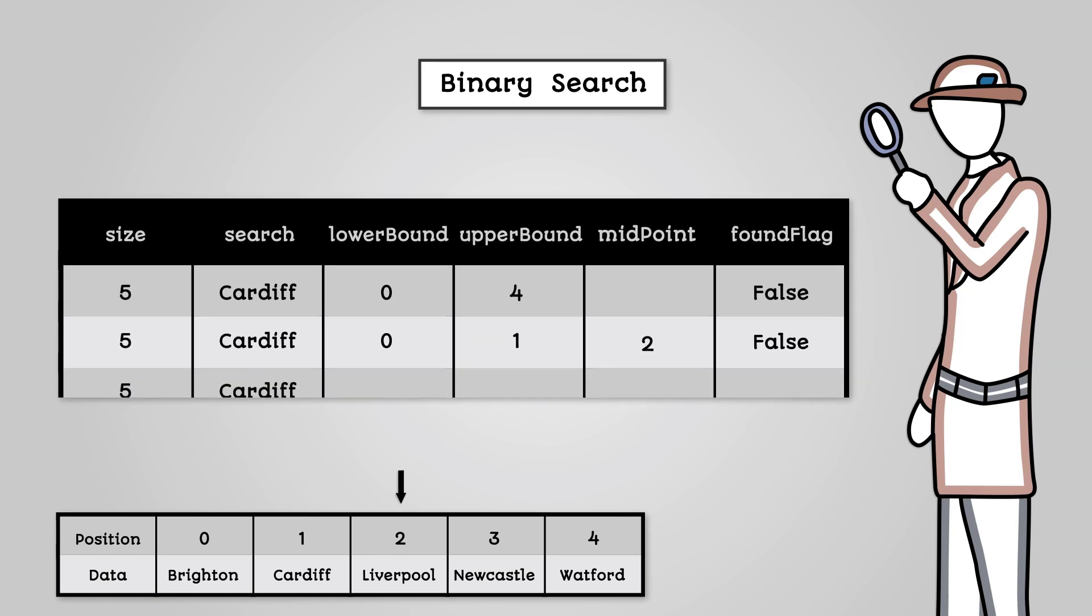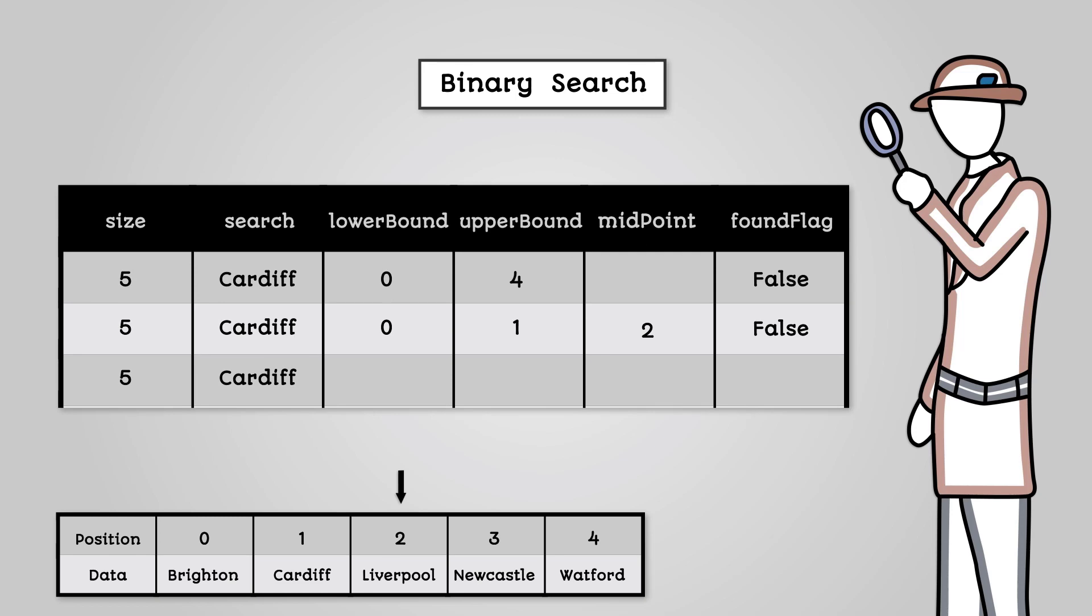The next time through the loop we again first calculate the midpoint. This time our midpoint will be 0. Remember the div operator performs a division and returns the whole number discarding the remainder. We can then check if the list value at index 0 is equal to Cardiff. The list value at index 0 is Brighton which is of course not equal to Cardiff so nothing happens. We then check if Brighton is below Cardiff alphabetically. It is so we set the lower bound of our list to the right of our current midpoint. This is 1.